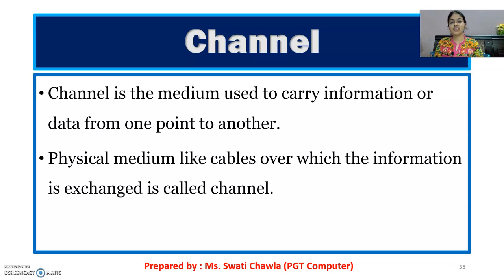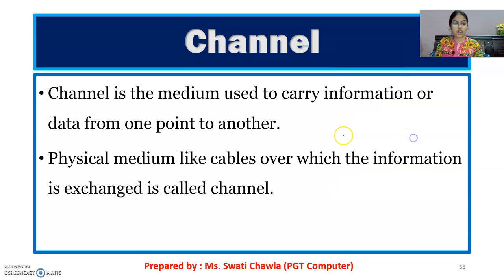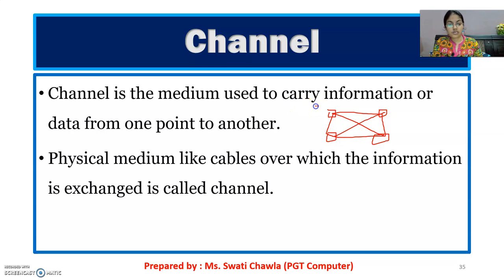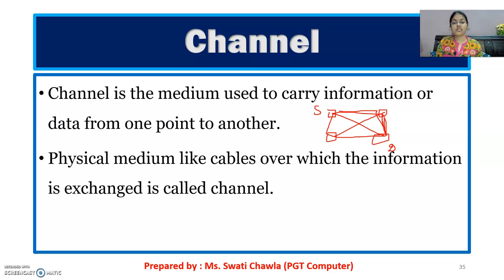Let's start with the first term, that is channel. Channel is basically a medium which is used to carry information or data from one point to another. Or you can say it is a path to transfer the data. Suppose I am having these four computers in a network. Since they are forming a network, I have connected these systems. Now suppose this system is the source and this is the destination — this wants to send the data to the destination. Now the medium we are using is called the channel. And that channel, or you can say that medium, it can be your wired medium or it can be your wireless medium. It can be your physical medium like cables, or it can be your wireless medium, for example radio waves.